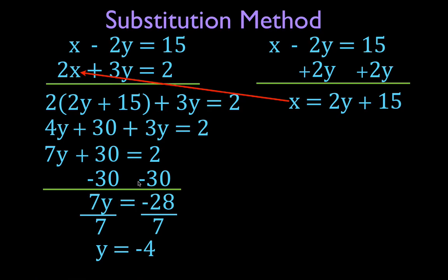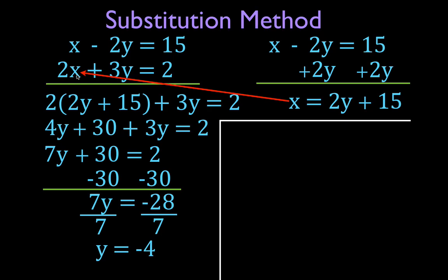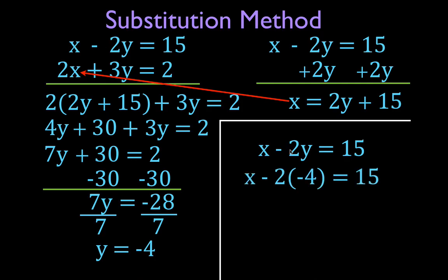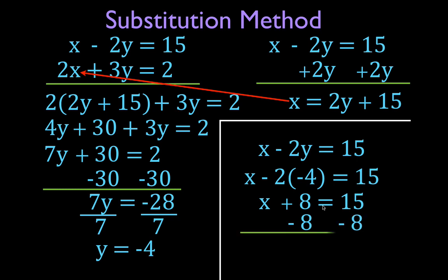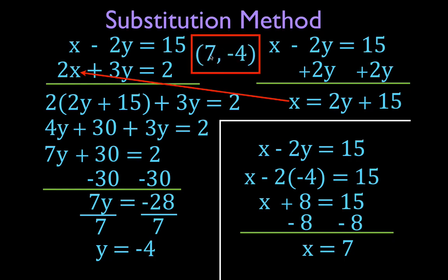We have the y value is minus 4, but we need the corresponding x value. We are going to take this y value and substitute it into either of these two equations and solve for x. It doesn't matter which equation you substitute into — you'll get the same answer for x. I chose to use the first equation. I'm going to substitute in x minus 2y; we now know y is minus 4, so I substitute that in. Equals 15. That means x plus 8 — because minus 2 times minus 4 is plus 8 — equals 15. I'm going to add minus 8 to both sides, and I get that x equals 7, because 15 plus minus 8 is 7.